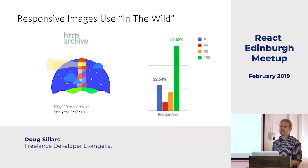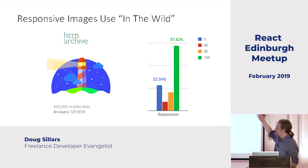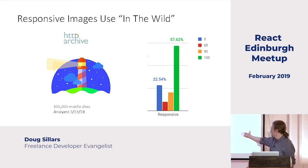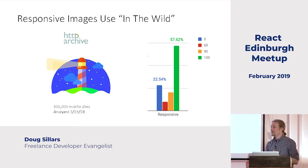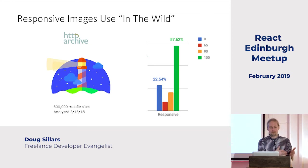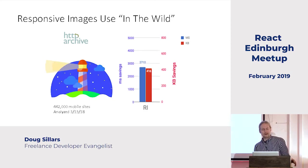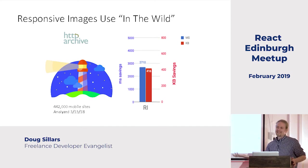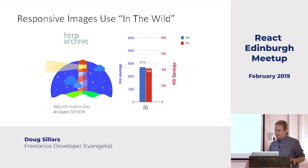When we look at responsive images from the HTTP Archive, most folks are doing this right — 57–60% are getting 100%. But about a fifth of the internet isn't doing this. They're not resizing images for mobile, probably serving desktop images to mobile devices. The median website would be 2.7 seconds faster and 400K smaller — a huge way to speed up content delivery.